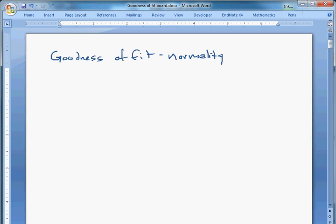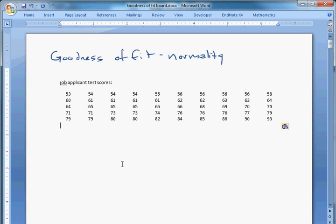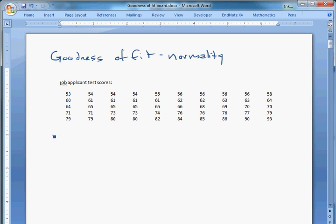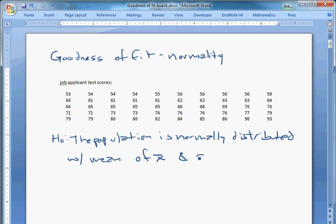So I'm going to use the example from a textbook that uses this data. I'm going to copy and paste it into this document so you guys can see. It uses this data for job applicant test scores. And as always, for goodness of fit tests, we have these hypotheses. The population matches. In this case, the population is normally distributed. And in this case, it's going to be with a mean of x bar, and you want to calculate what that is, and a standard deviation of s, whatever that is. And we're going to test that against the alternative that this is not normally distributed with those values.